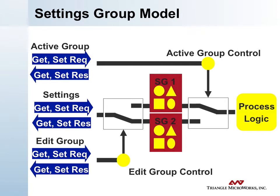This icon view of the settings group model shows how this process works. There's a control that you can do a get or set on — the active group control — that switches the process logic from one bank of values to another. At any given point in time, you can also set the edit group, which switches which group is available for editing, and then you can do get and set requests on the editable group to modify the values for the next time.